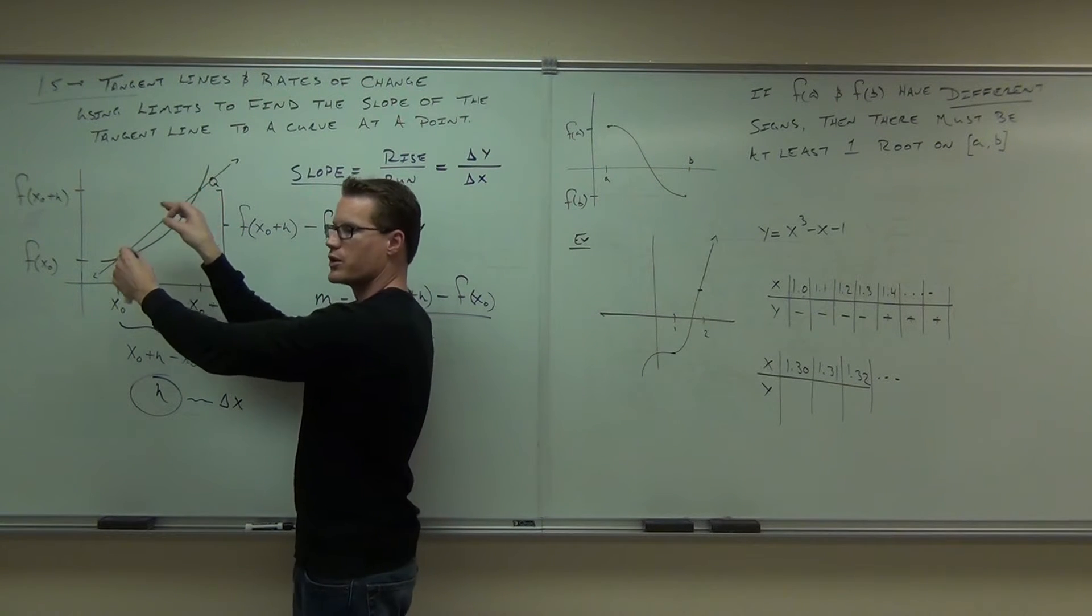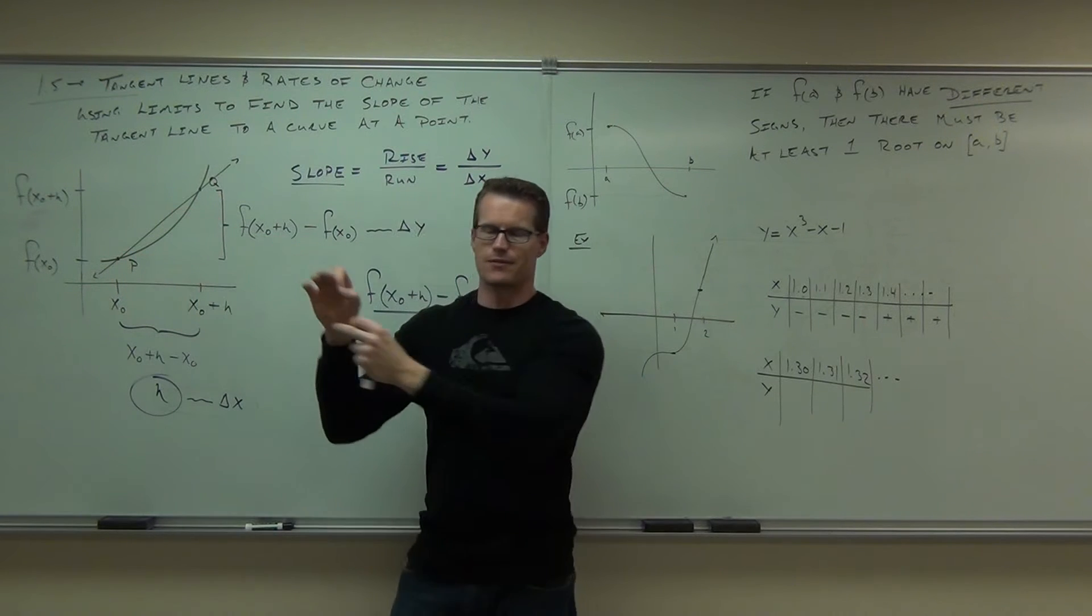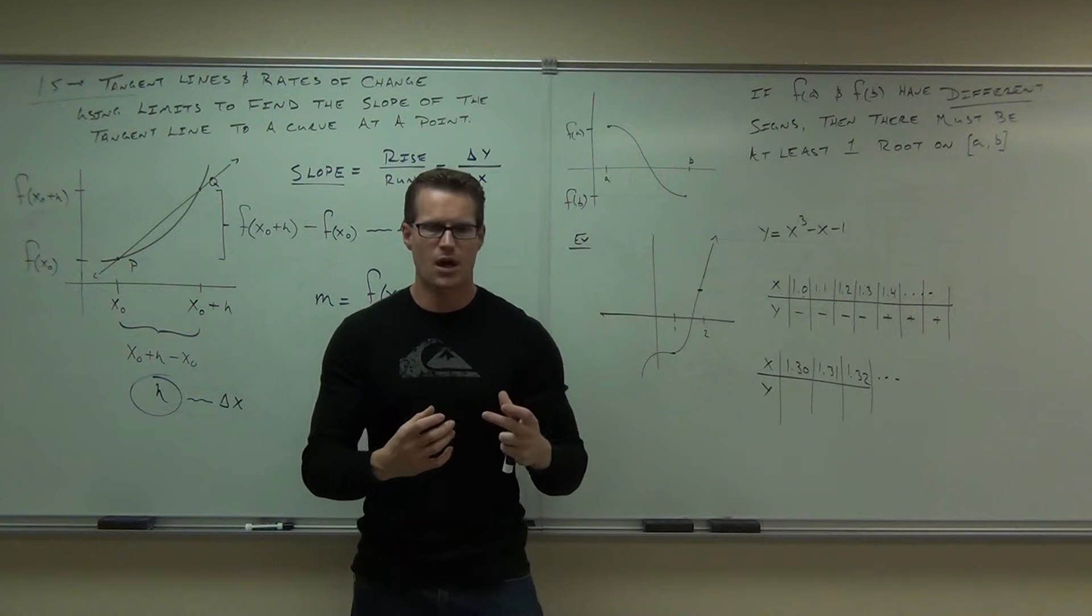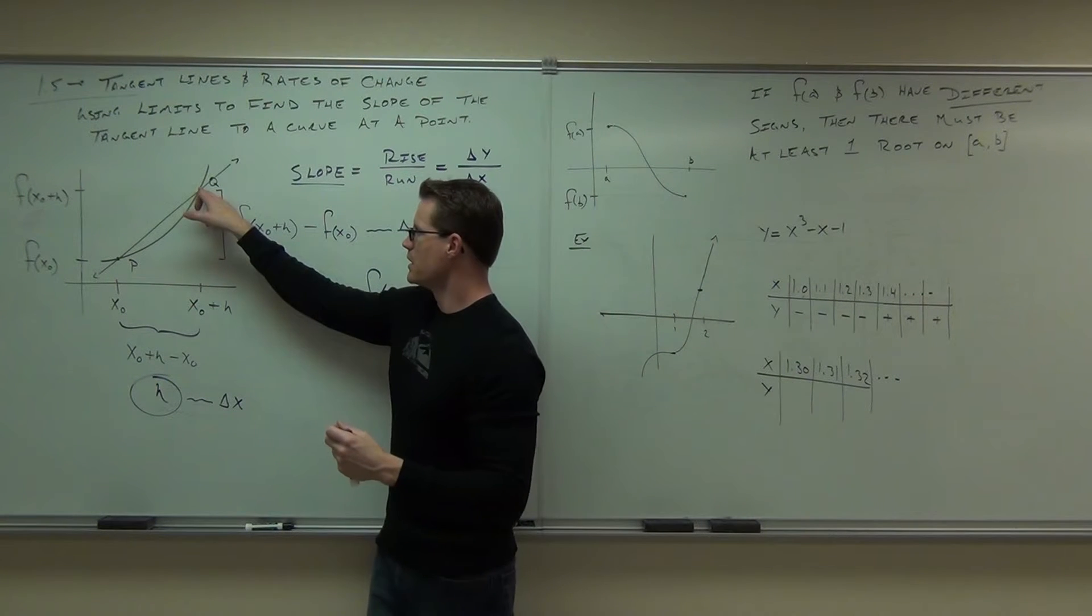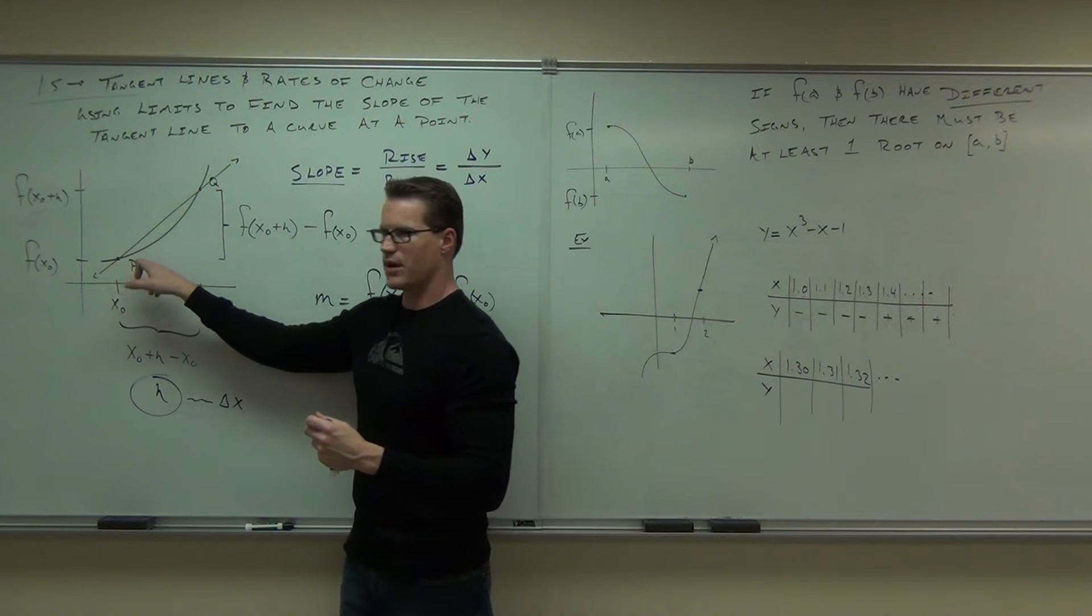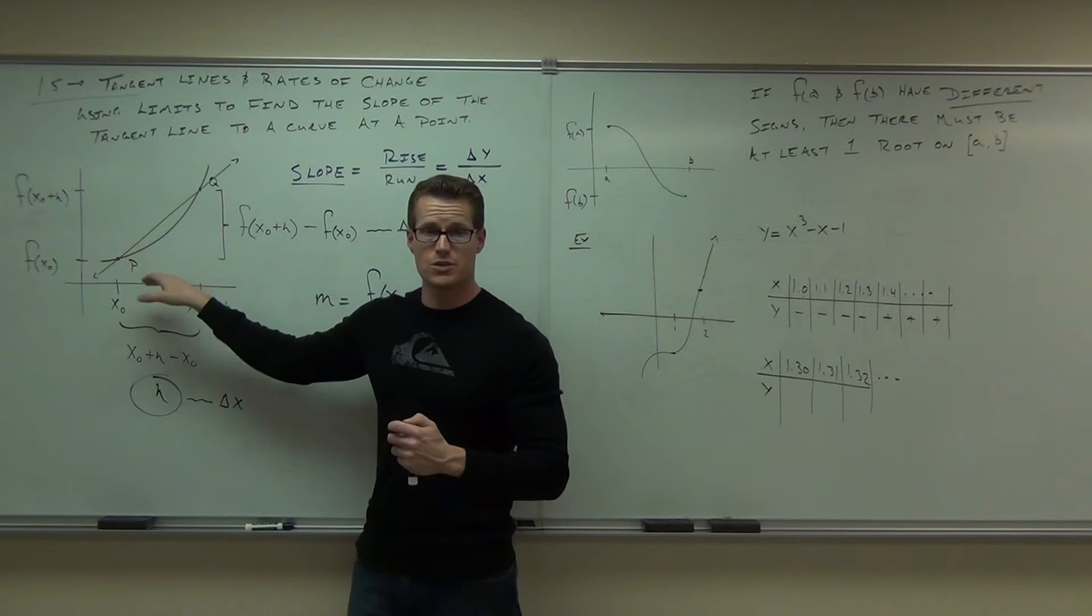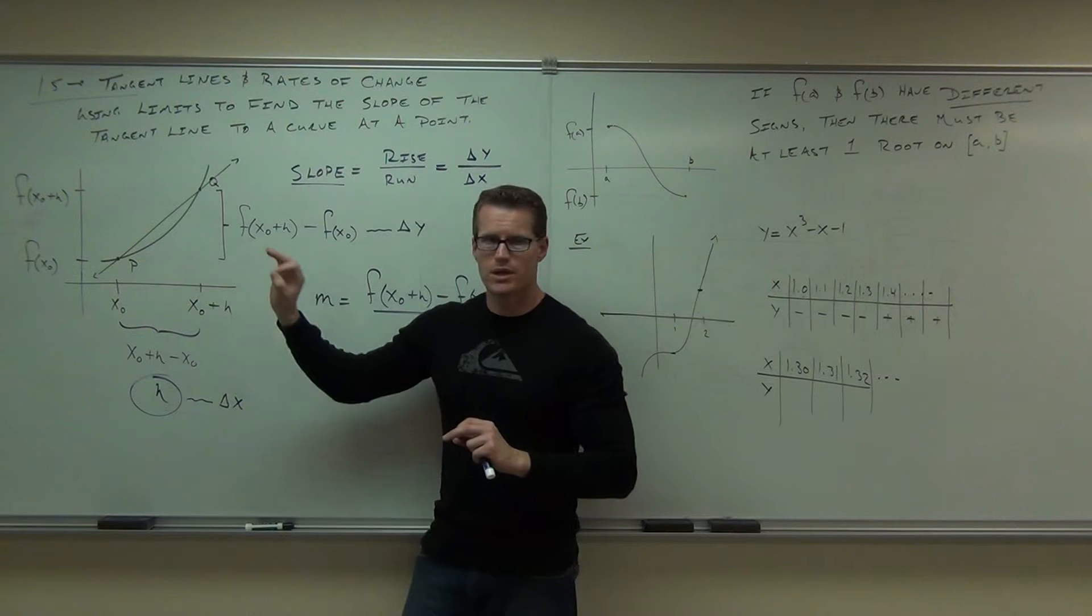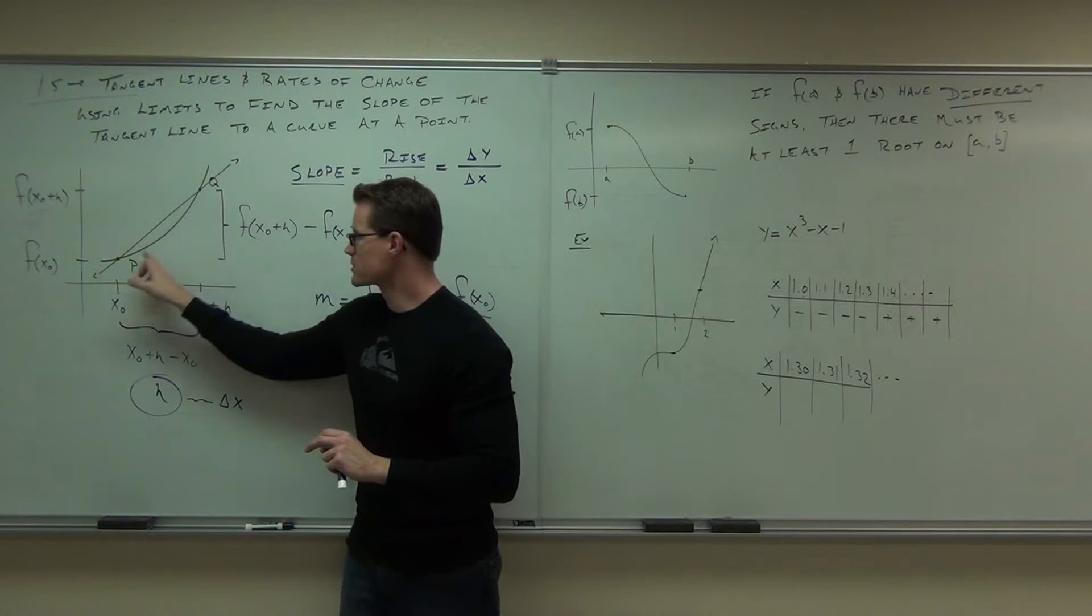What we want to do is just what we did like the first couple days of this calculus course - not the review but the calculus part. We want to let point Q get really close to point P. I've said it before, but how are we going to do that? We can't change x sub 0. That's fixed, okay?